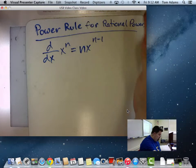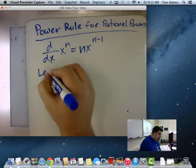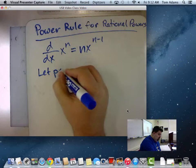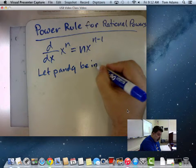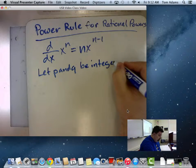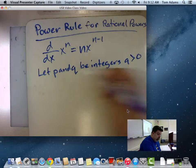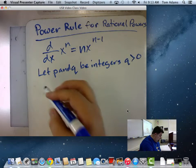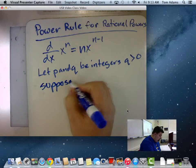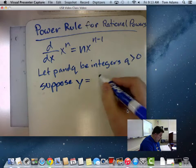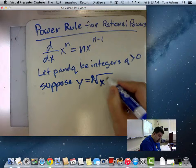But basically, this is the power rule, okay? And so the proof is we're going to let P and Q be integers where Q is greater than zero, and we're going to suppose that Y is equal to the Q root of X to the P,